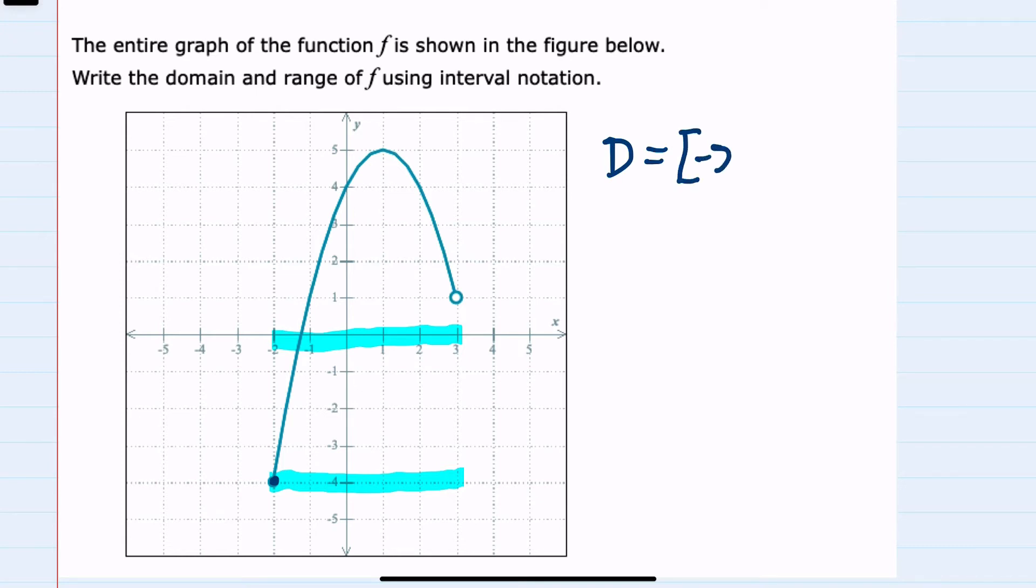Negative 2 is the smallest value in the domain, and then the largest value in the domain is 3. However, since 3 is an open circle, I know that it is not included.